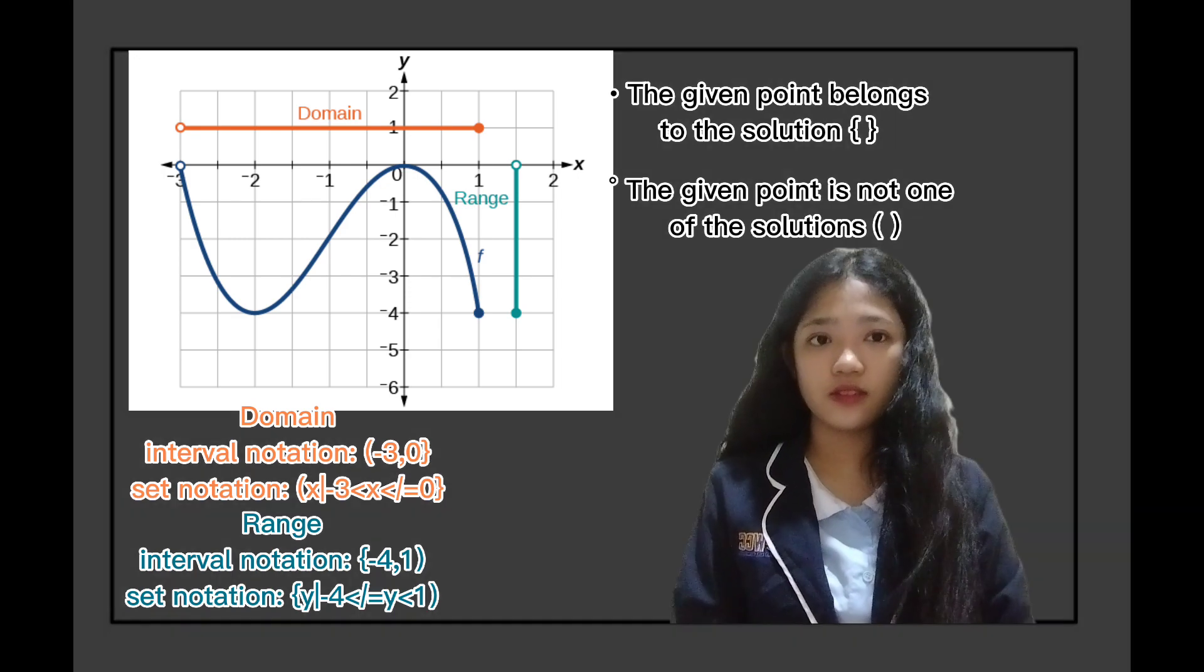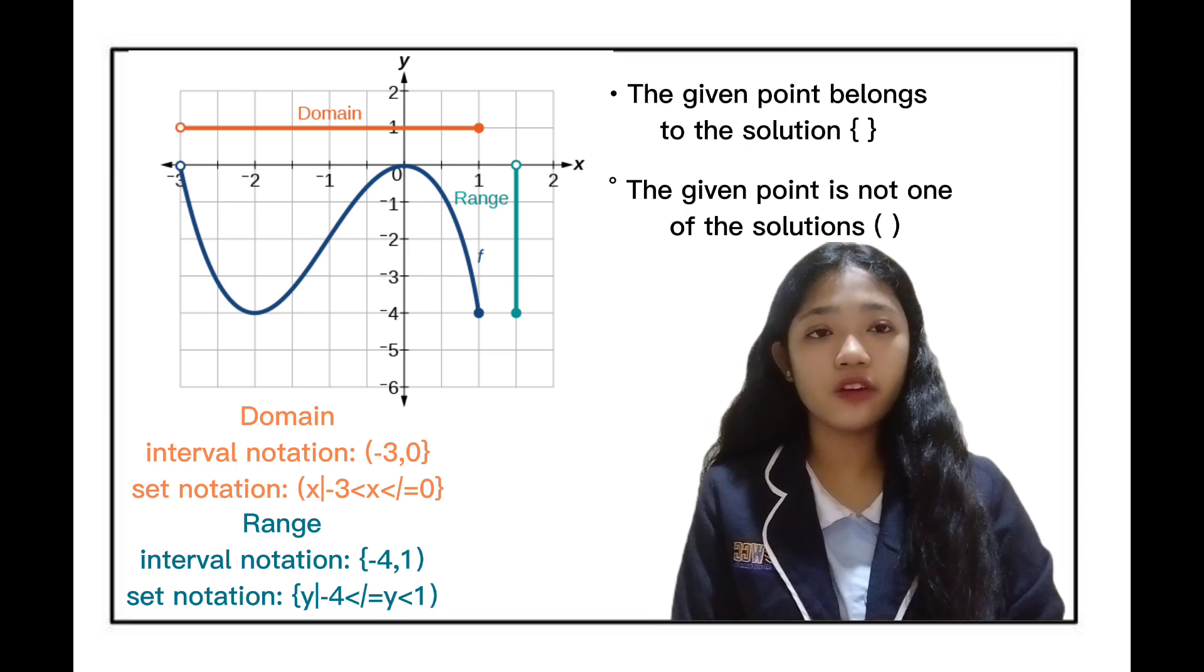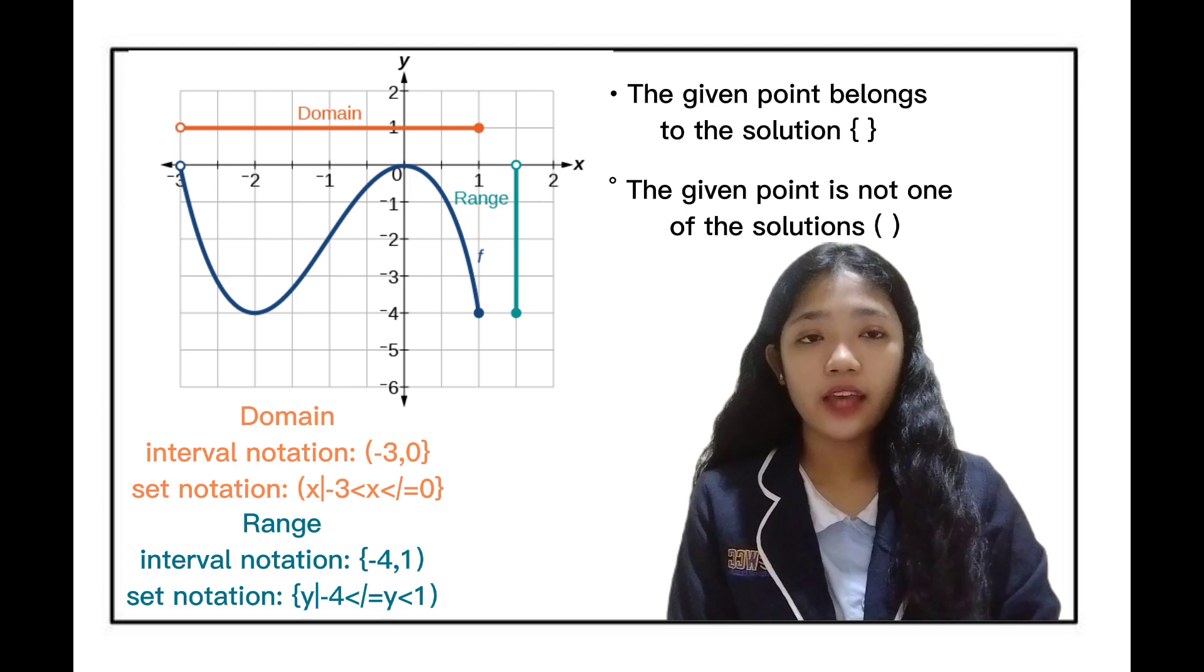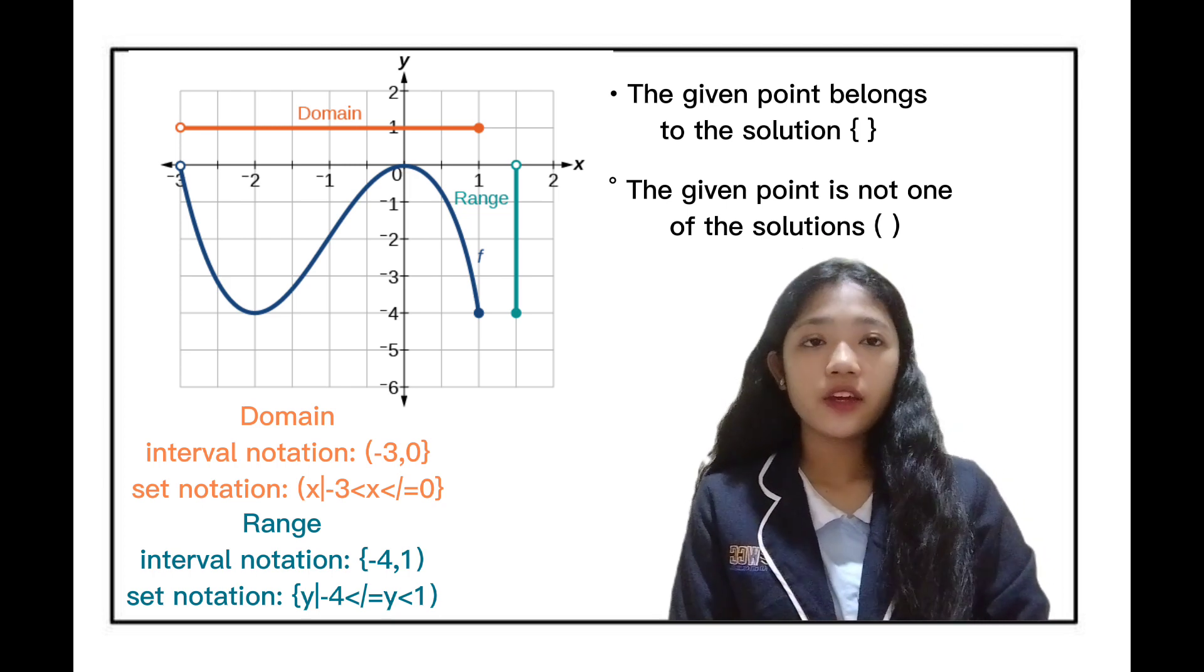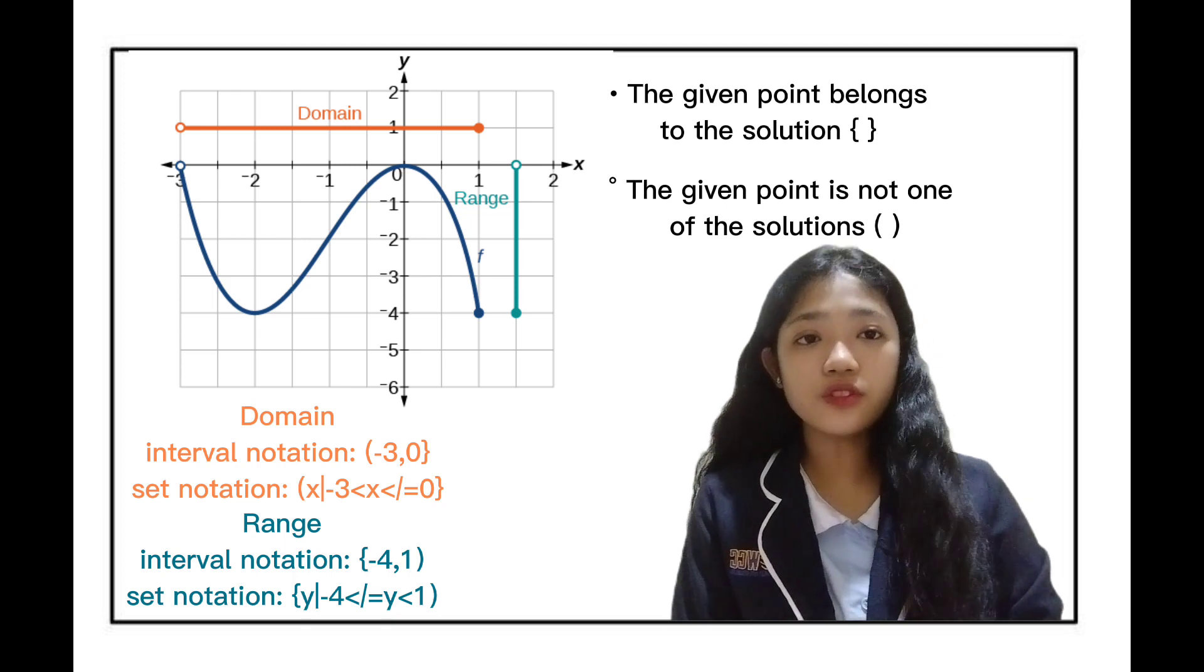Our domain is negative 3 to 0. In set notation: x such that negative 3 is less than x, which is less than or equal to 0.